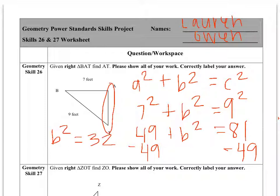To get B alone, we have to take the square root of B squared equals the square root of 32. So B is approximately 5.66 feet. That is how you solve the problem and find the missing length AT.